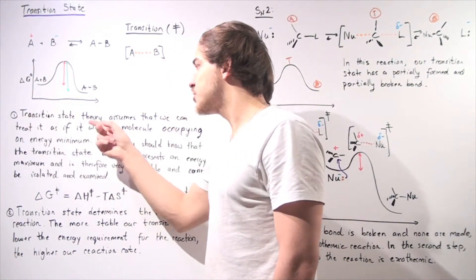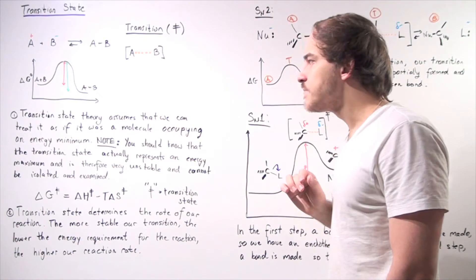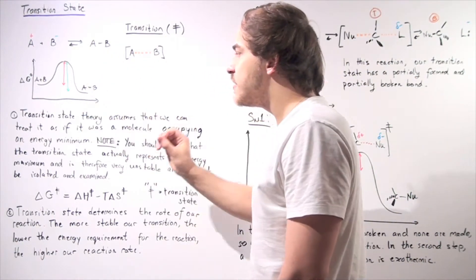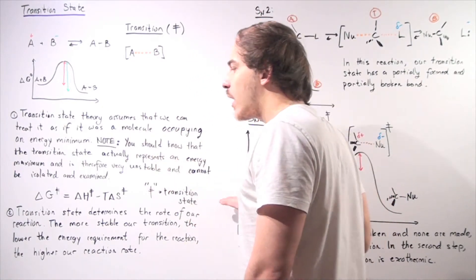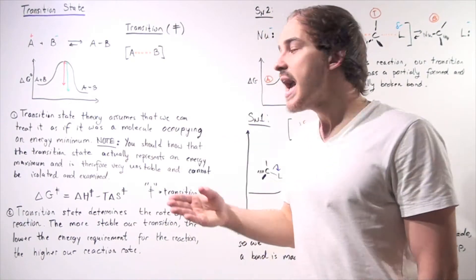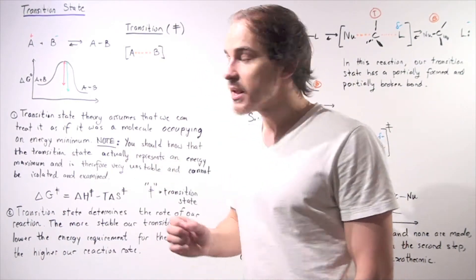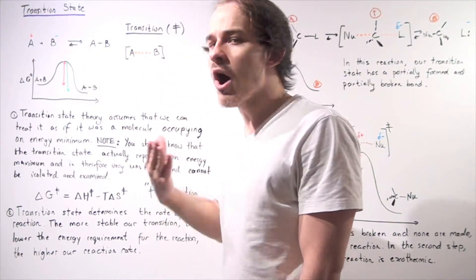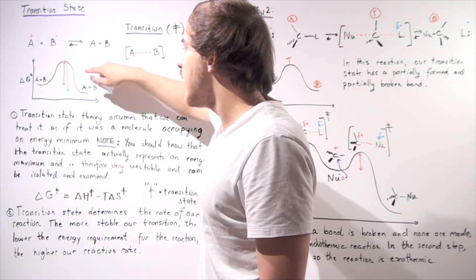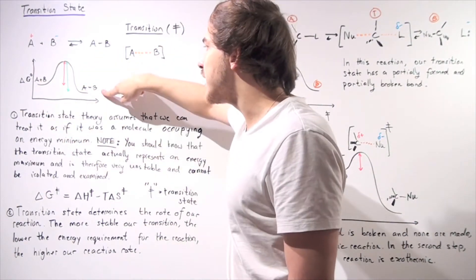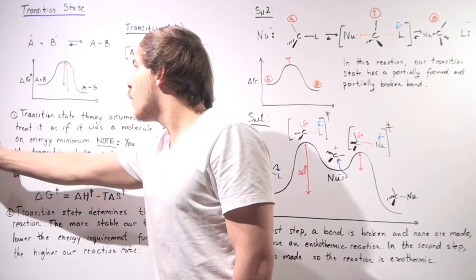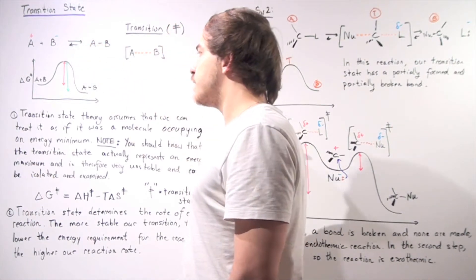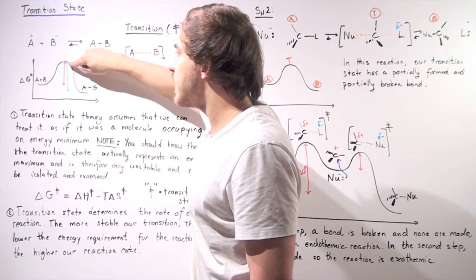According to transition state theory, we make the assumption that we can, in fact, isolate the transition state and study it. This assumption allows us to use the change in Gibbs free energy formula, which in turn allows us to calculate the activation energy — the energy required to surmount the energy hill and go from initial reactants to final products. For the forward reaction we have a smaller activation energy; for the reverse reaction we have a larger activation energy.